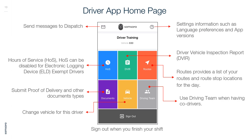Here is the Driver App home page. From here you are able to: send messages to dispatch; manage Hours of Service (which can be disabled for ELD-exempt drivers); submit proof of delivery and other document types; change vehicle for this driver; access Settings such as language preferences and app versions; access the Driver Vehicle Inspection Report (DVIR); view Routes with route stop locations; use Driving Team when having coworkers; and sign out when you finish your shift.